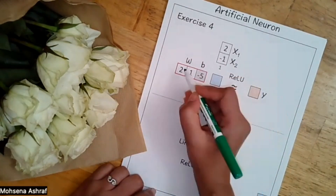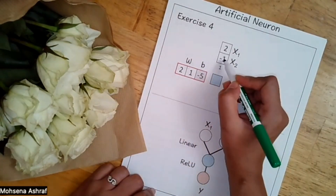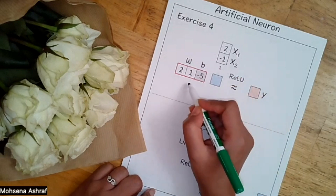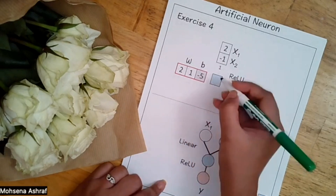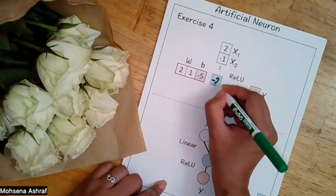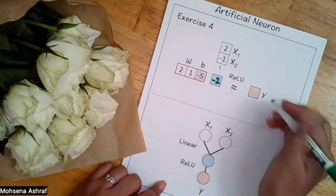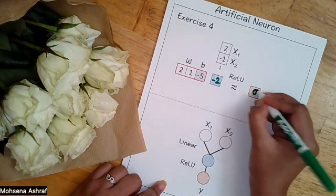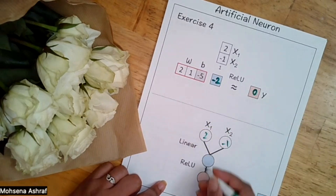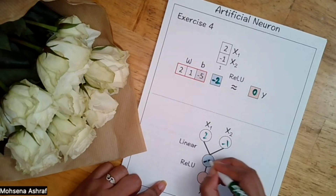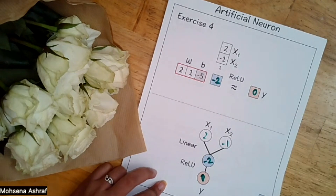Again: 2 × 2 = 4, then 4 + 1 × (−1) = −1, so 4 − 1 = 3, then 3 − 5 = −2. The ReLU function will return 0 from −2. So x1 = 2, x2 = −1, the linear layer output is −2, and ReLU gives 0.